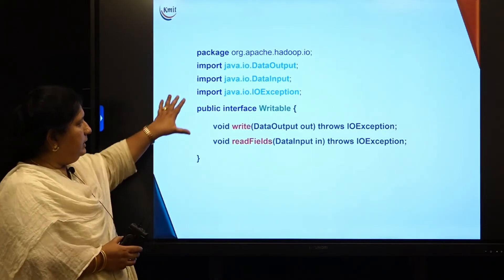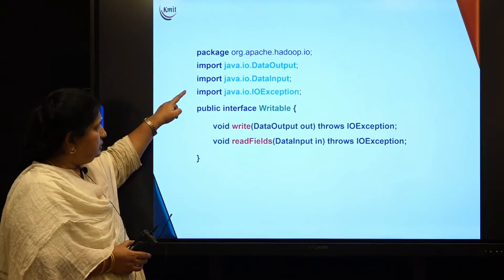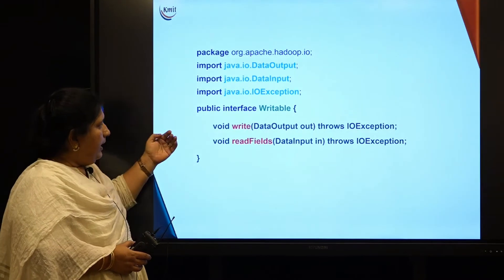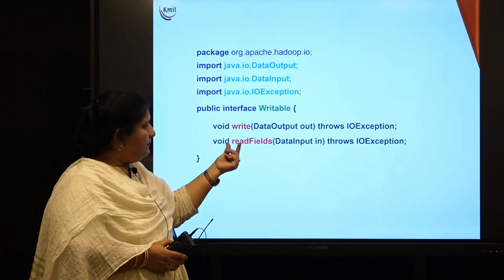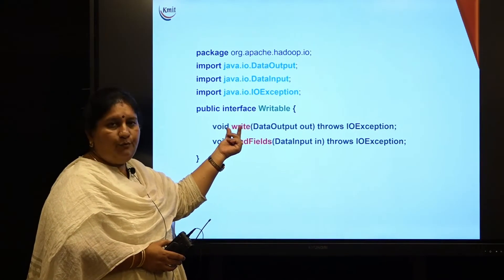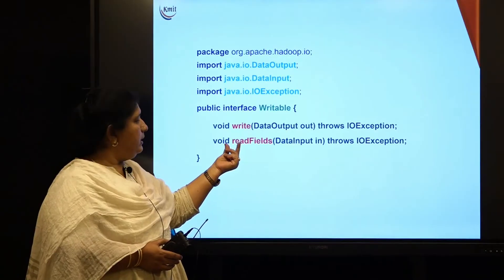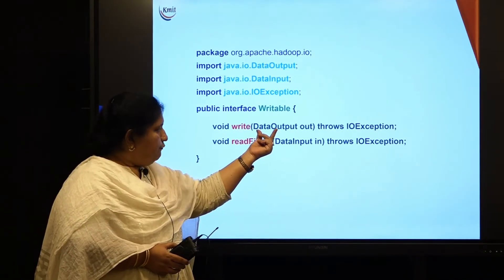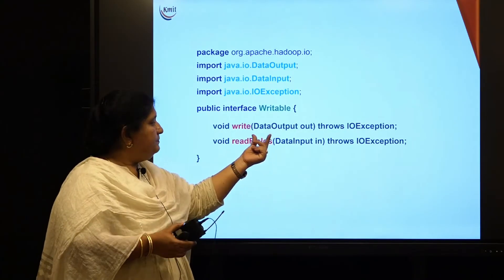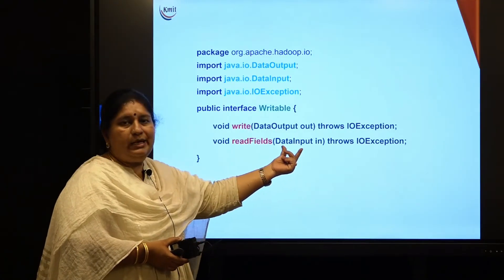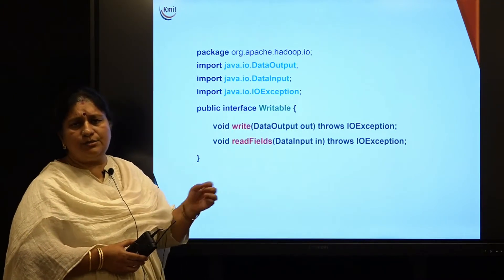Looking at the declaration of the interface — it comes with the appropriate packages and imports. The signature is 'public interface Writable' with two methods: a write method for writing data to persistent storage, and a readFields method for reading data back. The write method takes a DataOutput object, and readFields takes a DataInput object. Both are likely to throw IOException since we are dealing with files.